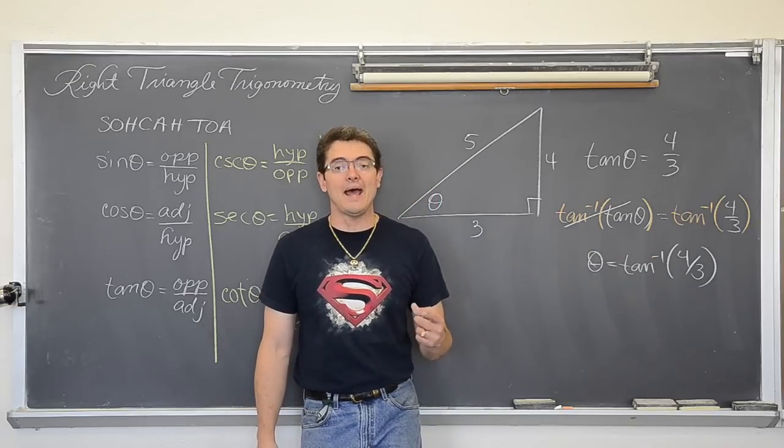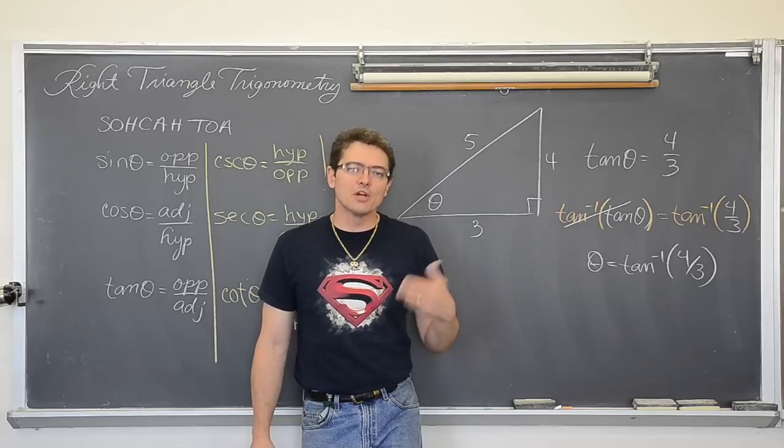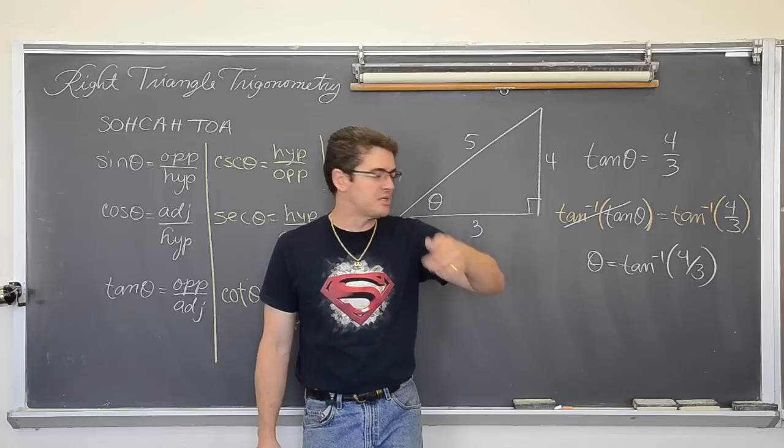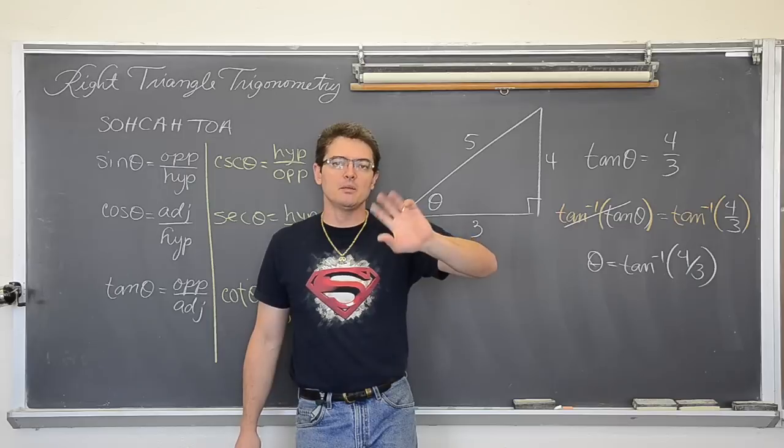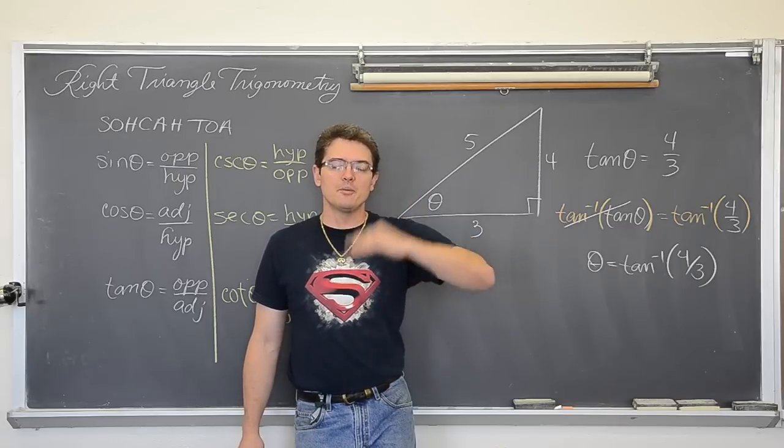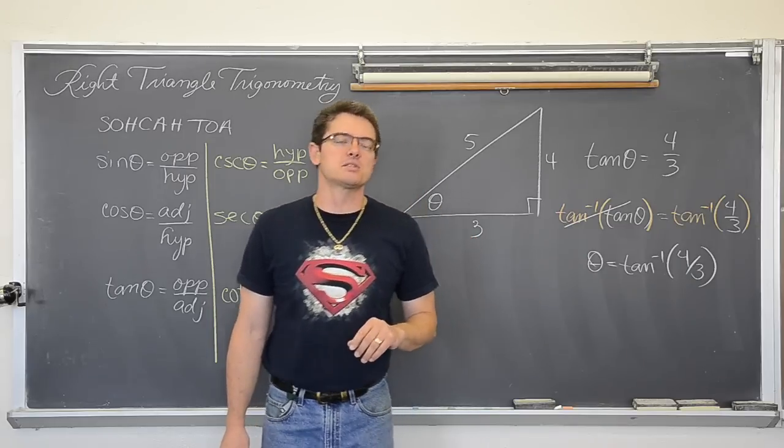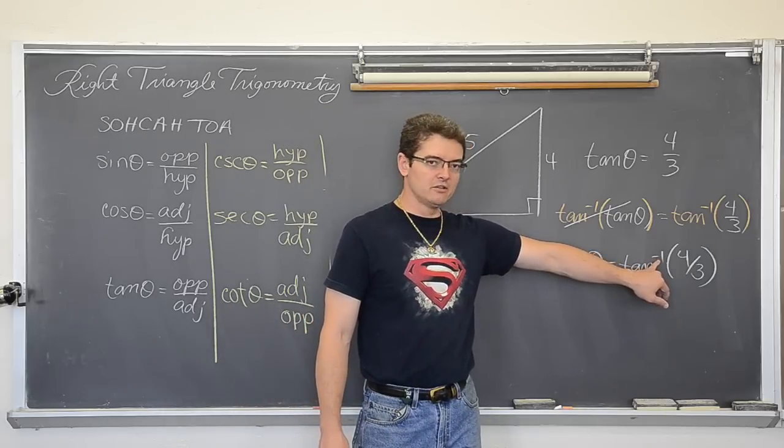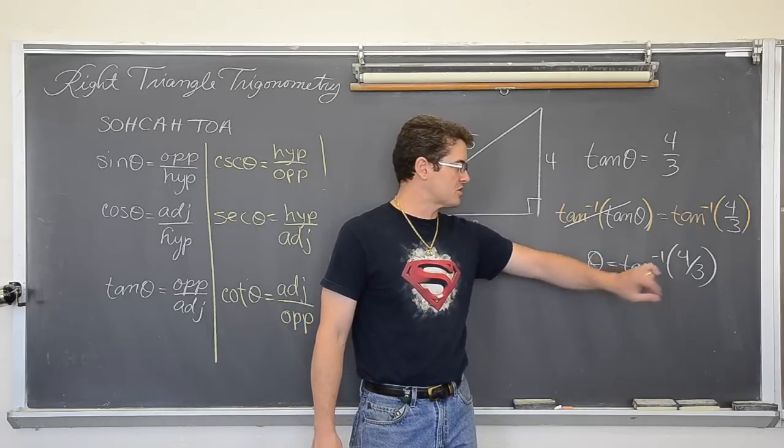Now 2 to the negative 1 is 1 half. 2 thirds to the negative 1 is 3 over 2. So a lot of times we see these negative exponents as just flipping the base or moving the base on which that negative exponent sits on. But when you talk about math functions, this is an inverse math function.